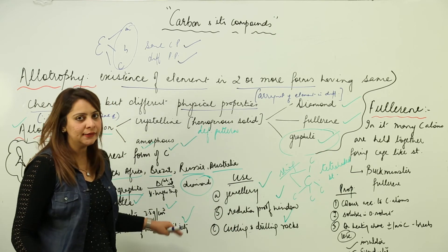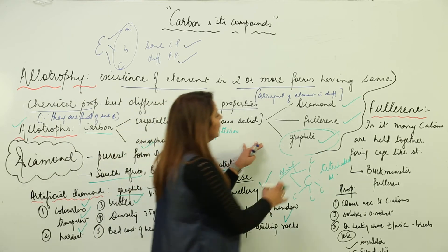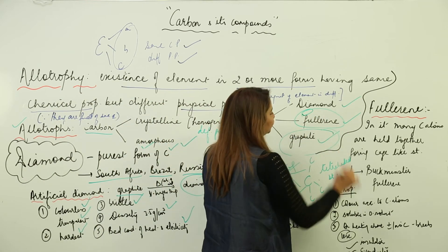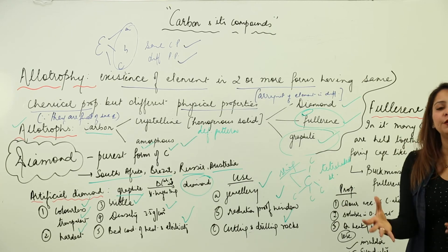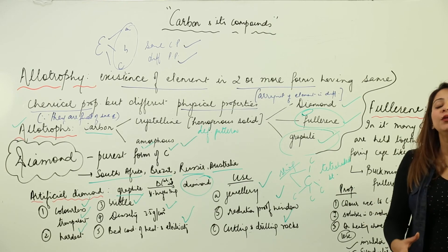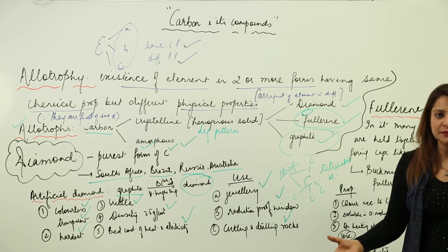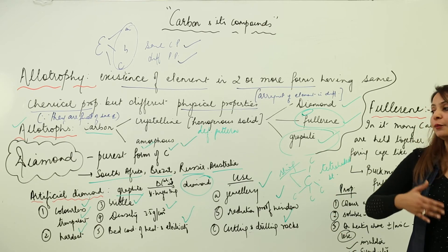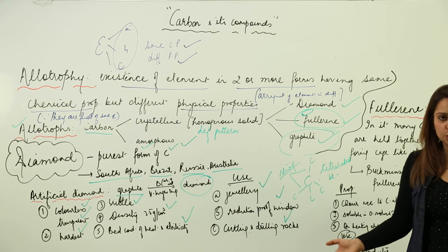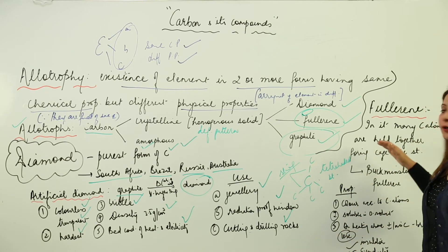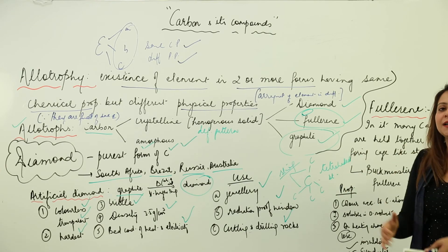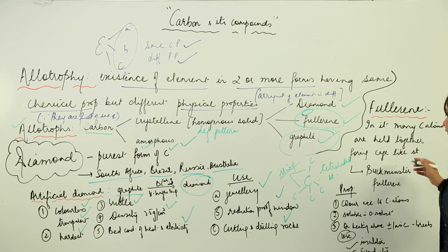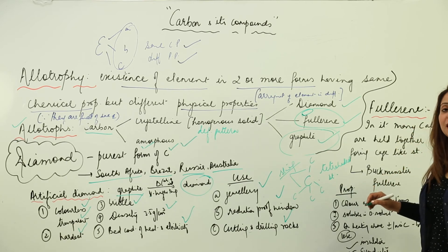This is diamond. Coming to the third crystalline form, that is fullerene. In fullerene, many carbon atoms are arranged together forming a cage-like structure which resembles a football. The carbon atoms can range up to 200 or 300. It was first studied by Buckminster Fuller, therefore it is named fullerene.